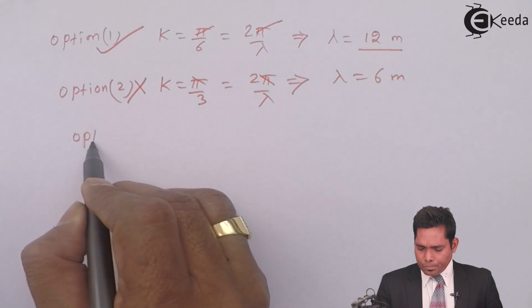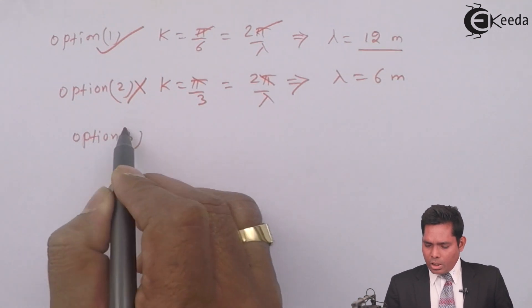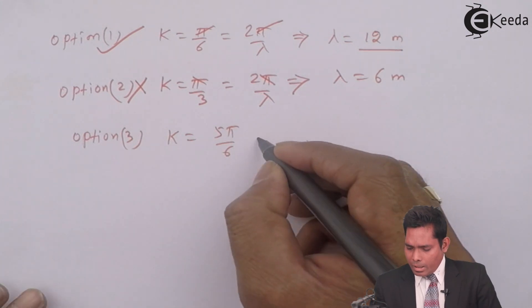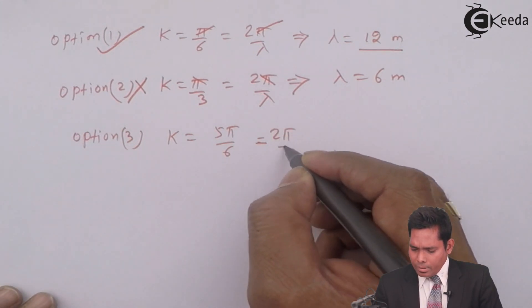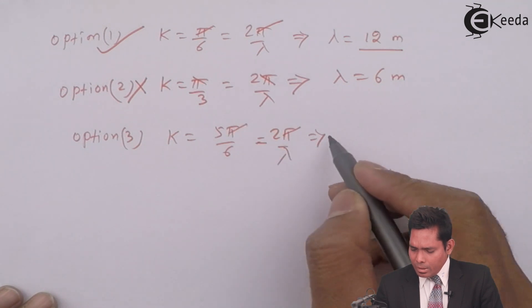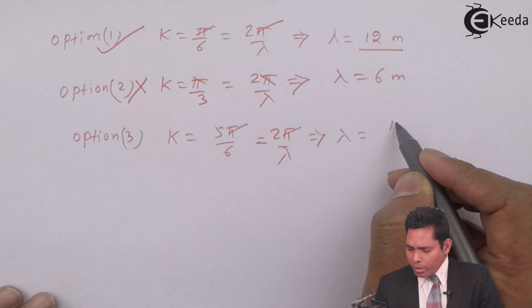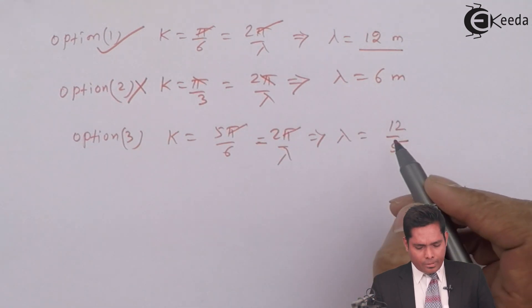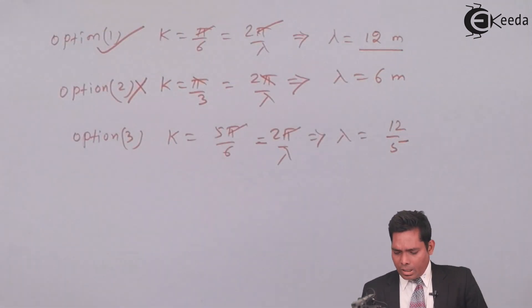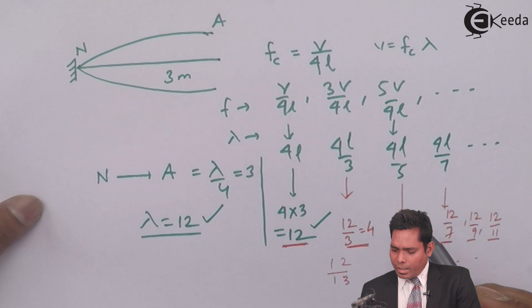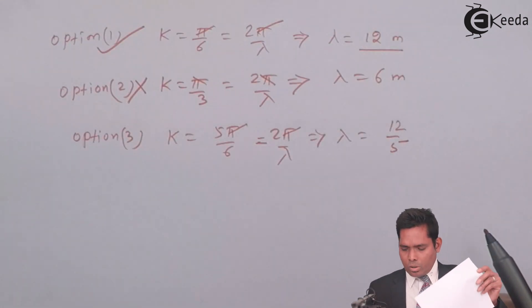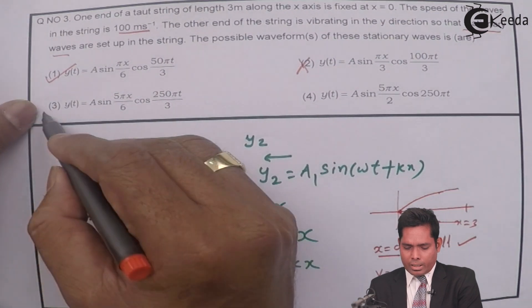For option 3, k = 5π/6. Using k = 2π/λ gives λ = 12/5. Looking at our list of valid wavelengths, 12/5 is present. So option 3 is also correct.